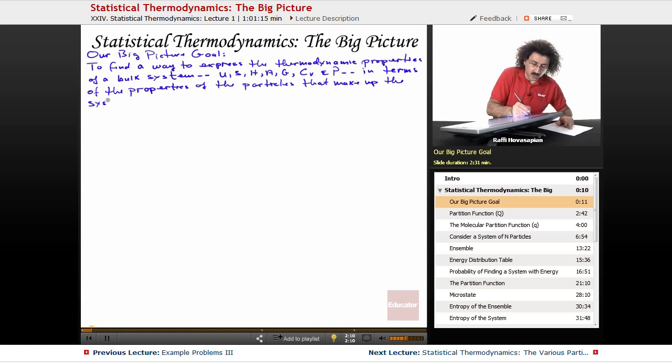So that's what we're doing with statistical thermodynamics. Now that we have quantum mechanics, we want to go back and we want to explain what we learned in classical thermodynamics via the individual particles. That's it. We're just closing the circle, like we talked about in the overview of the course.